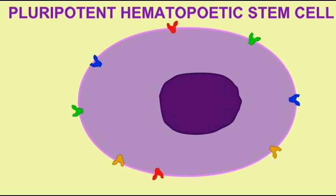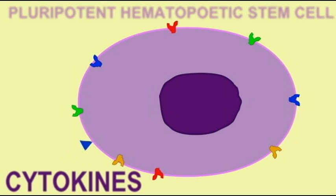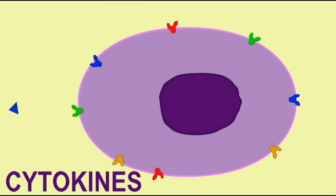The stem cells of the bone marrow can also be stimulated by cytokine hormones. These are local hormones which only travel short distances to their target cells.